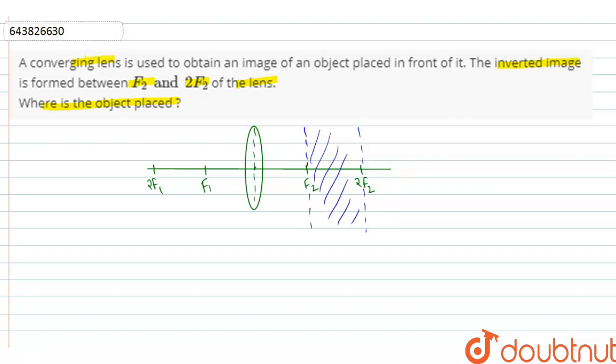And we know that if the image is formed inverted between f2 and 2f2, then the object should be placed at, the object is placed beyond 2f1.